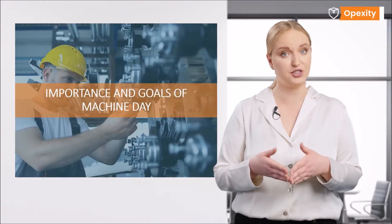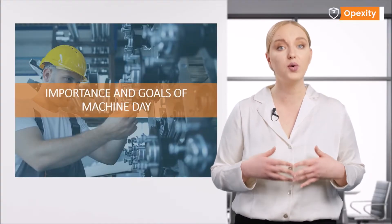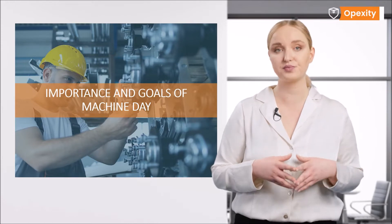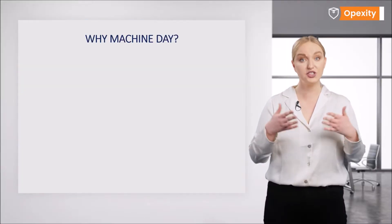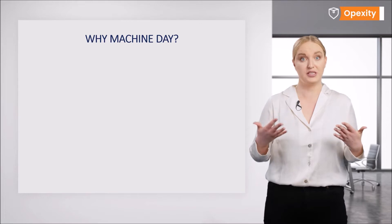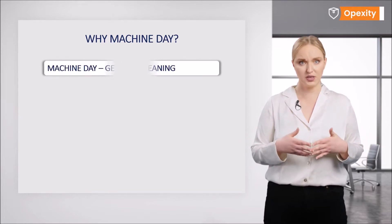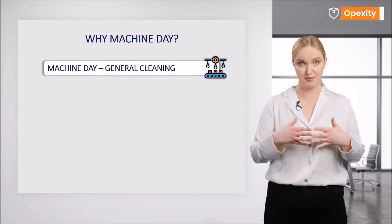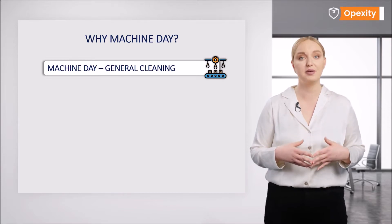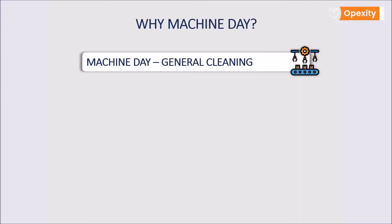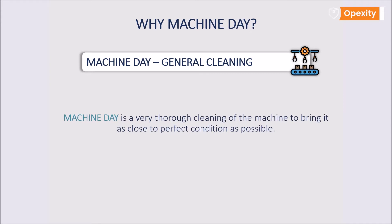Now we'll move on to the first issue, where I'll tell you about the importance of pre-cleaning. Let's start with where the name Machine Day comes from. According to the seven steps of implementing autonomous maintenance, the first step is a general cleanup. The name Machine Day was adopted to emphasize the importance of this event — it is no more than a celebration of the machine, where everyone takes the time to get it as close to perfect as possible.